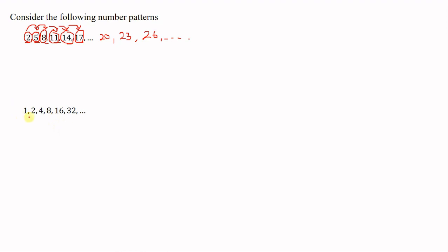Here the pattern is: 1, 2, 4, 8, 16, 32, and so on. If you look at the terms closely, the first one is 1, then 2, then 4, then 8, then 16, then 32. The next term is always double the previous term — double of 1 is 2, double of 2 is 4, double of 4 is 8, double of 8 is 16, double of 16 is 32.